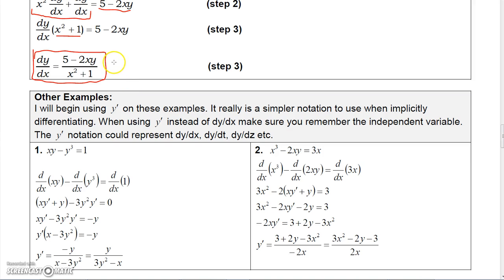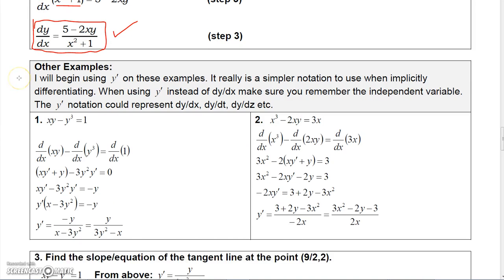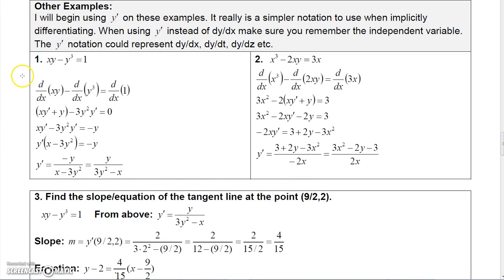Notice the derivative here is written in terms of both x and y, and we're going to assume we can't figure out what y is in terms of x. In the other examples, instead of using dy over dx, I'm going to use y prime — it's a little quicker notation. So let's take a look at the next problem.